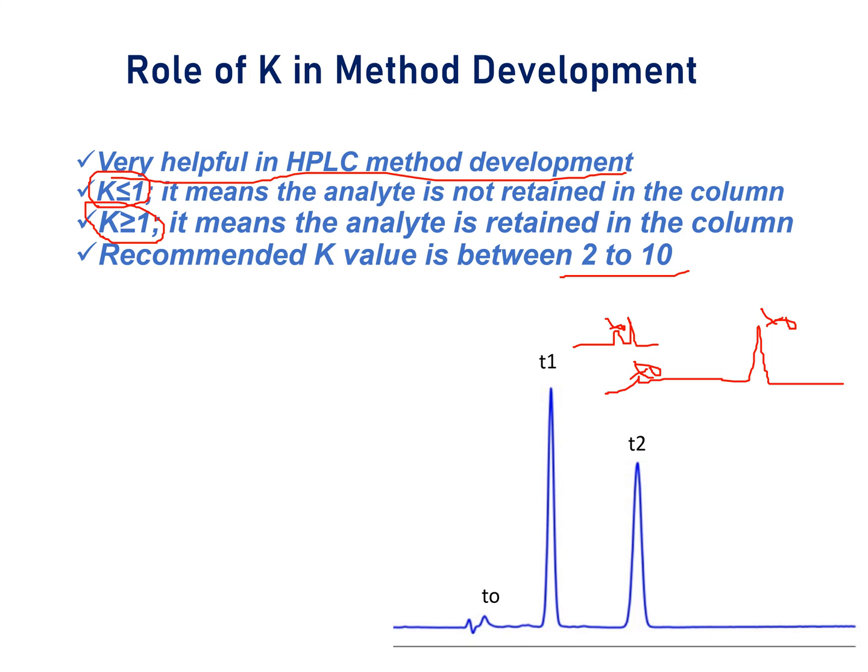In this chromatogram, for each peak that is T1 and T2, capacity factor is between 2 to 10. That is all about this session.